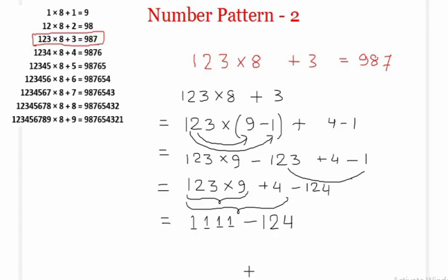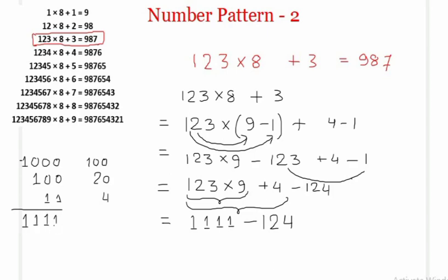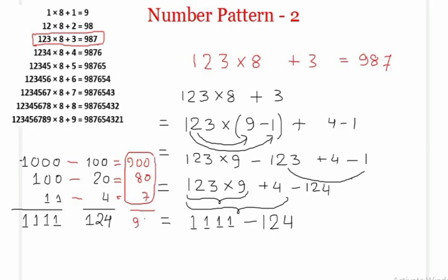Now there is a beautiful way to find this difference. 1111 is the same as 1000 + 100 + 11, and 124 is the same as 100 + 20 + 4. When we subtract these two numbers term by term: 1000 − 100 = 900, then 100 − 20 = 80, then 11 − 4 = 7. Adding all those partial results gives 987.